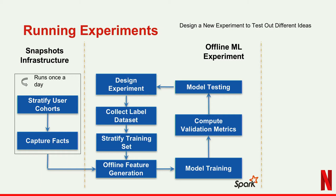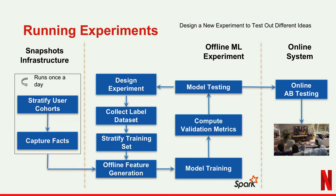Then you train a model, compute validation metrics on it, test the model, and if the offline metrics can be further improved, you keep doing this in an iterative fashion until the model is deemed good enough to go to A/B test — at which point we allocate an A/B test, and hopefully the A/B test wins and we go to production. The snapshot infrastructure and the offline experiment are all mostly running in Spark. In this talk, I'll be focusing on the stratification pieces, which see their application both in the snapshot infrastructure and when stratifying the training set for our machine learning models.